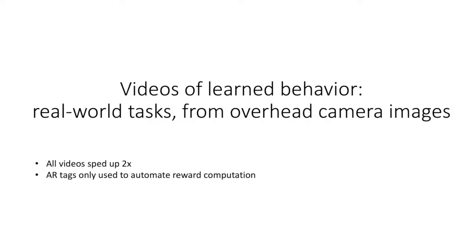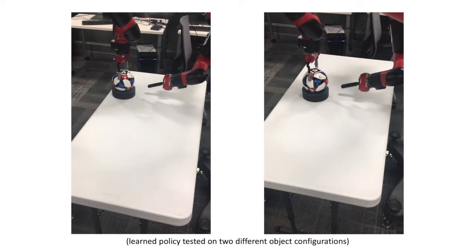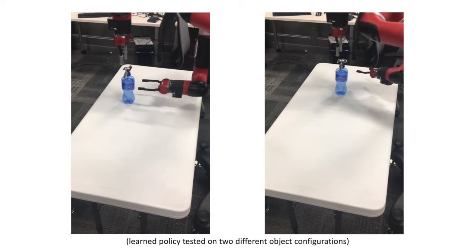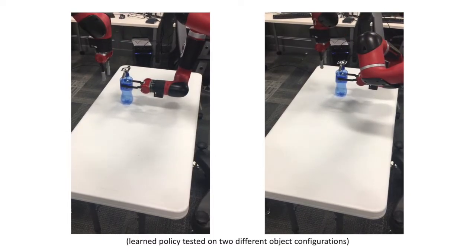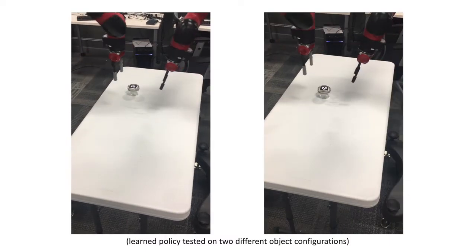The remainder of this video shows examples of the learned behavior. The AR tags are only used for automating the reward computation. Our model is not given any object pose information. The two videos side-by-side show the tasks being completed from two different object starting poses, highlighting the robustness of our learned policies.